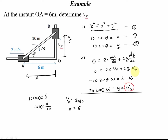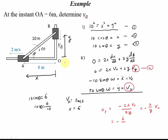From the first differentiated equation, Vy equals negative 2x times Vx divided by 2y. We know x equals 6. To find y: 10 squared equals 6 squared plus y squared, so y squared equals 100 minus 36 equals 64, giving y equals 8.